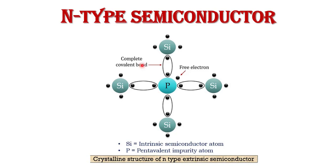This is the crystal structure of an N-type extrinsic semiconductor. Here we use a pentavalent impurity — phosphorus is added to the silicon atom. Phosphorus is a pentavalent impurity atom, so it has five valence electrons in its outermost orbit.